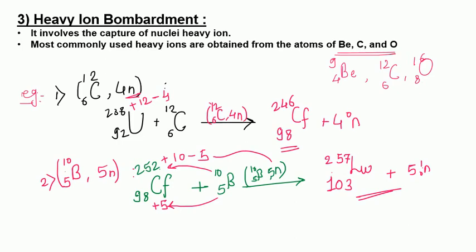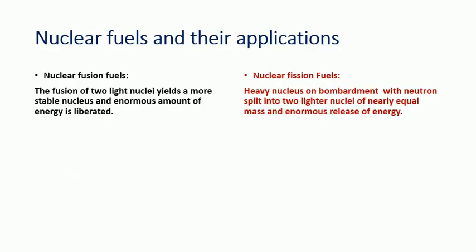Reactions with oxygen can also be written similarly. These are the three main methods used to synthesize transuranic elements: neutron bombardment, bombardment with accelerated particles (helium, proton, deuterium), and heavy ion bombardment. The next important topic is nuclear fuels. Nuclear fuel is the element which produces heat energy by its nuclear fission or fusion reaction.